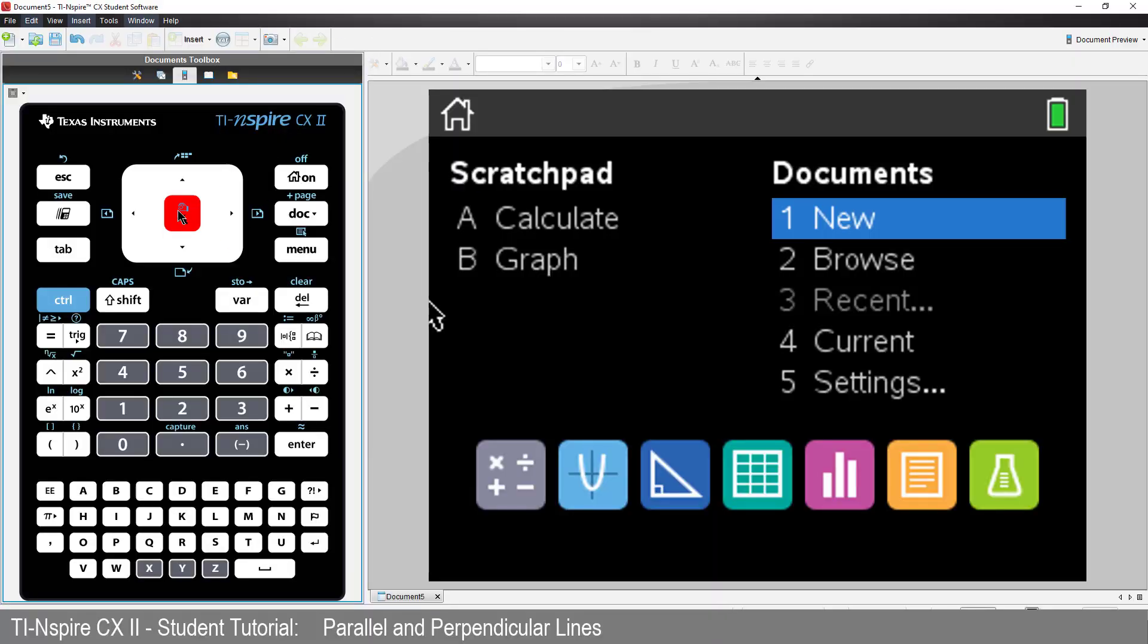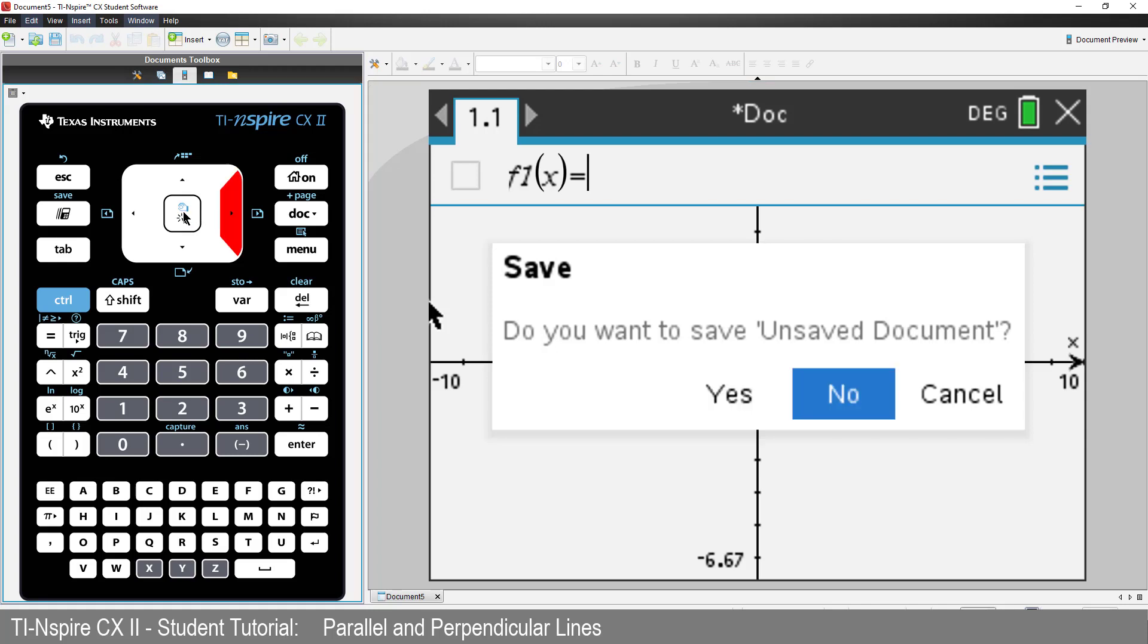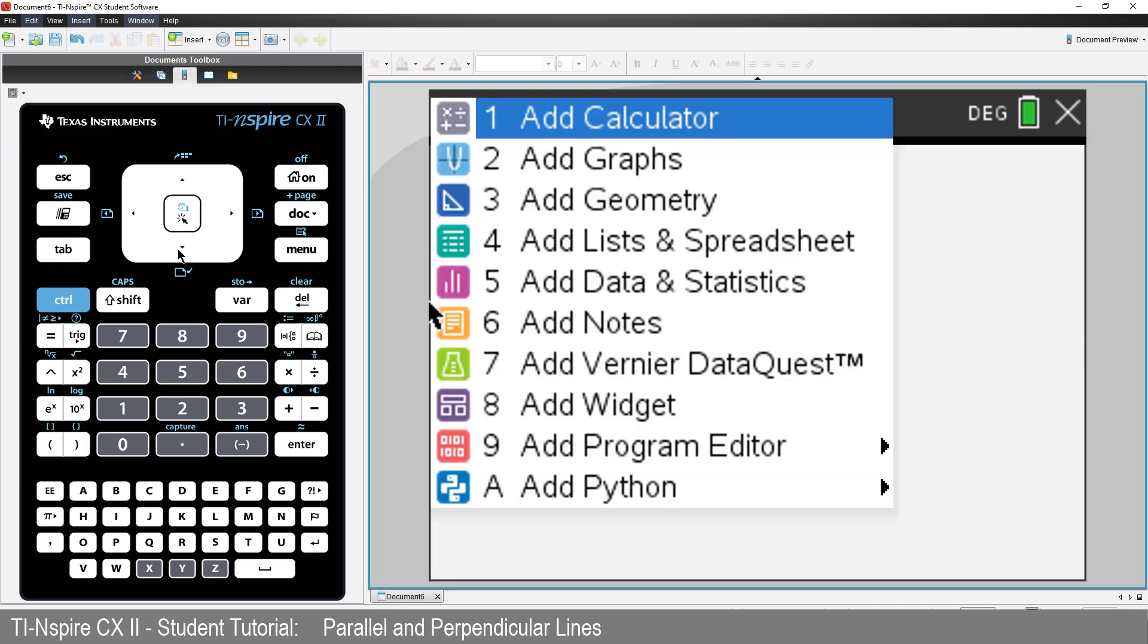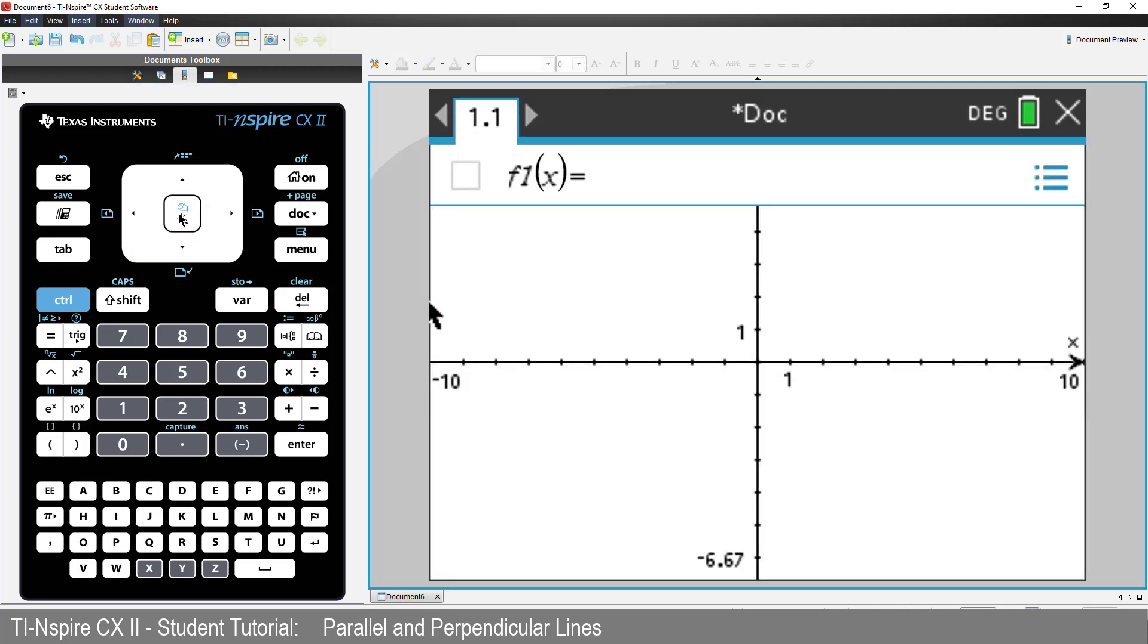Start a new document and insert a graphs application. We are going to be plotting points and drawing lines. To keep the points as whole numbers, we can display a dot grid.